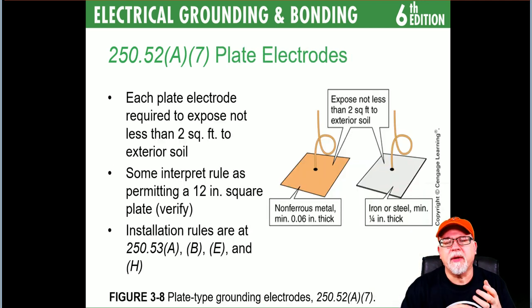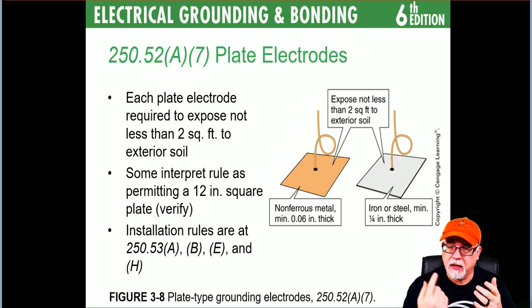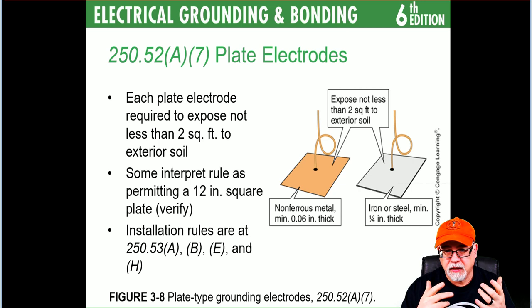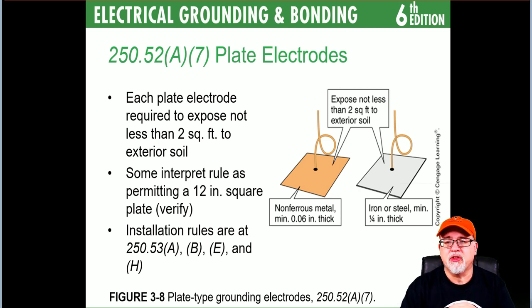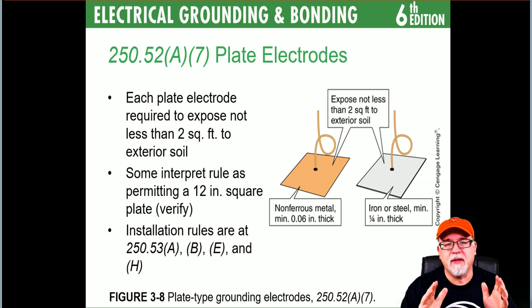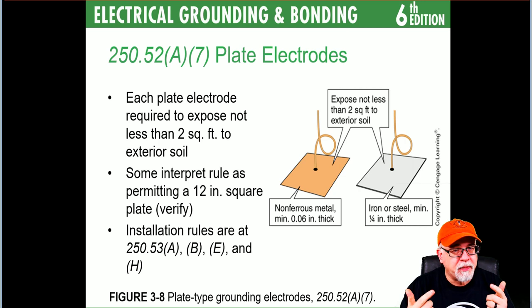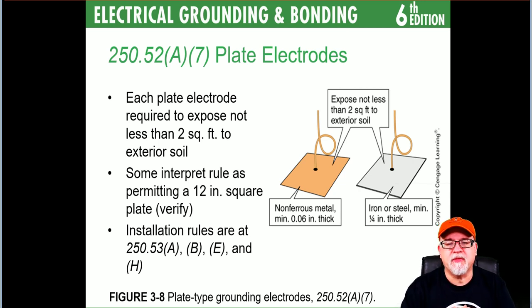250.52(A)(7) — plate electrodes: each plate electrode is required to expose not less than two feet to the exterior soil. Some interpret this as permitting a 12-inch square plate — check with your local jurisdiction. Literally speaking, it can't be less than two feet square in contact with the soil. When you buy these plates, manufacturers already understand the rules. Installation rules are in 250.53(A), (B), (E), and (H).